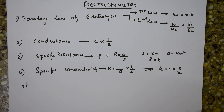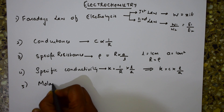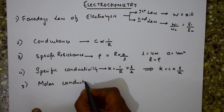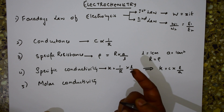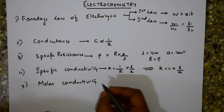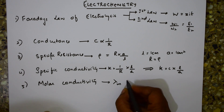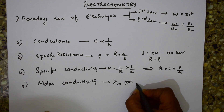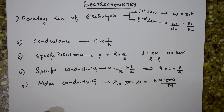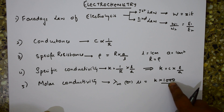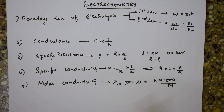The next formula is molar conductivity, which represents the sum of the conducting power of all the ions. It is denoted by mu (μ) and can be written as μ = κ × 1000/M, where capital M is the concentration in mole per liter — that is, the molarity of the solution.